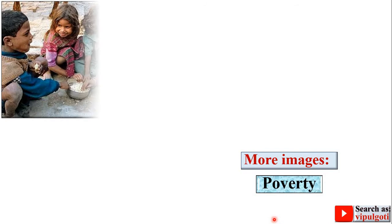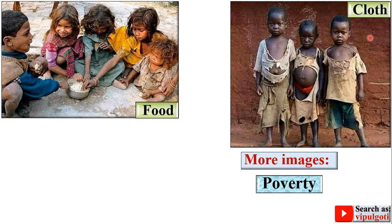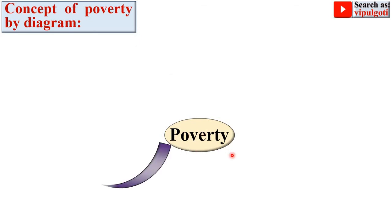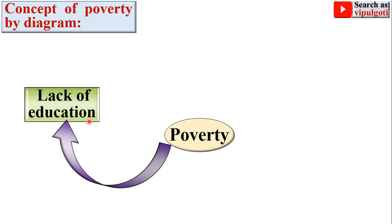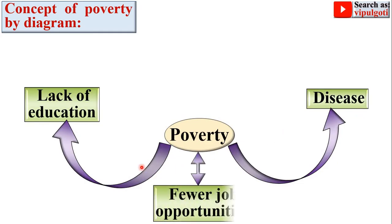Looking at poor images of poverty, due to poverty there is a lack of food availability, lack of clothing availability, and lack of shelter availability. In Hindi, we can say roti, kapda aur makaan. Now looking at the concept of poverty by diagram: due to poverty there is a lack of education, due to poverty there are more diseases, and due to poverty job opportunities are fewer — and due to fewer job opportunities, poverty will arise.